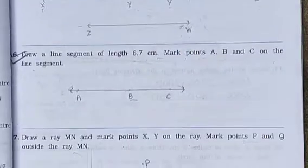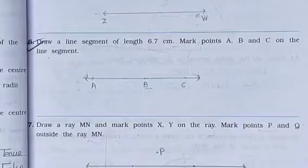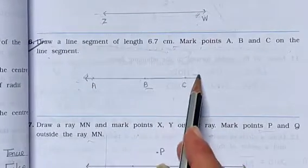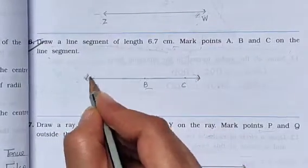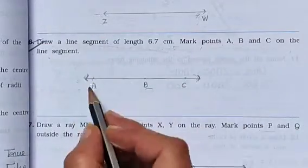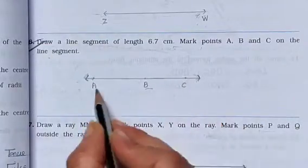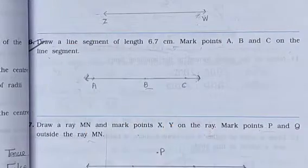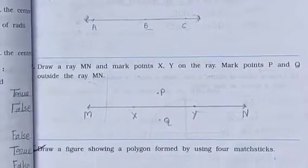Question number 6: Draw a line segment of length 6.7 cm. First draw a 6.7 cm line with arrows, then mark points A, B and C on the line at approximately 3.1 cm, 2 cm and 3 cm positions respectively.